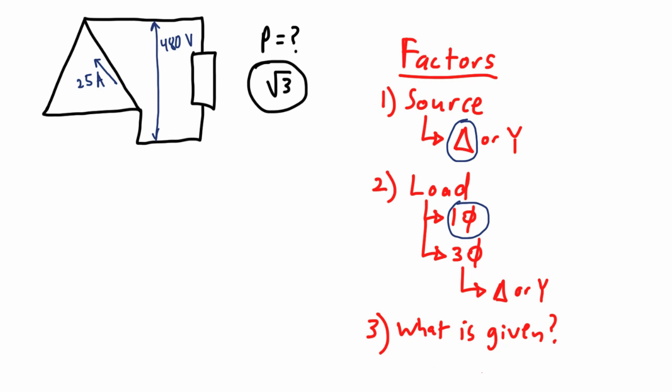Now recall, we are solving for power, so our equation is P equals VI. Since it's a delta source with no neutral, both the line and the phase voltage are 480. And so there is no need in the third factor to distinguish between the phase voltage or the line voltage. They all equal the same thing. We have just plain voltage.